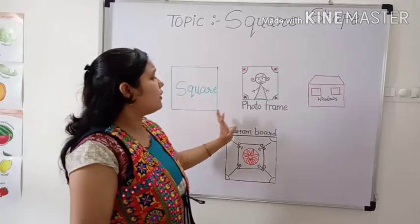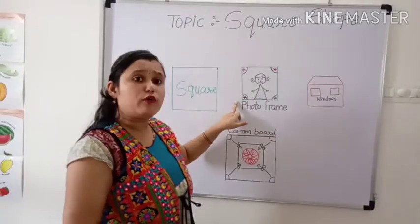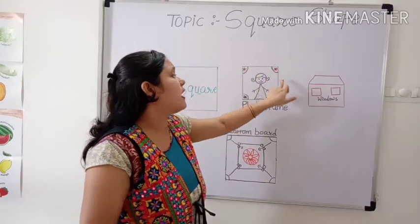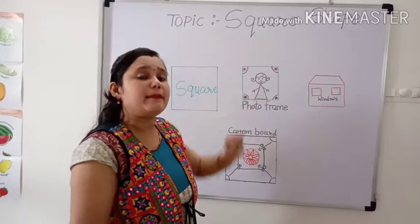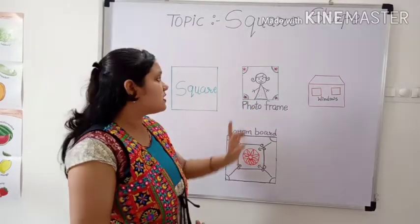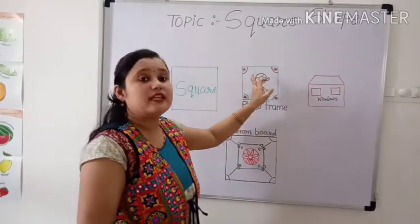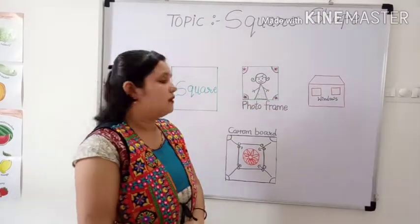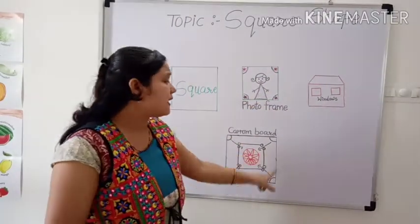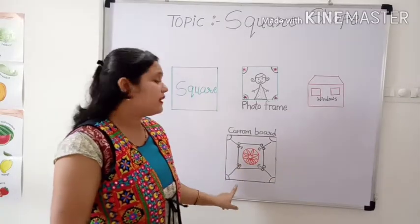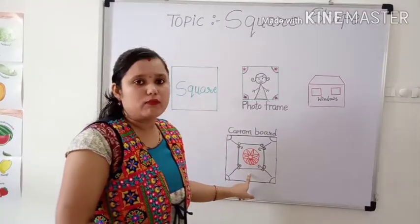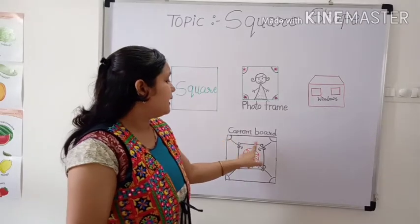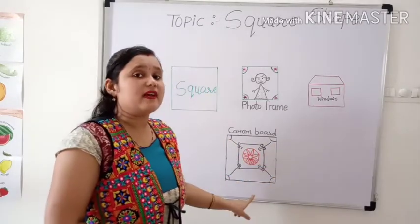Look here. This is a photo frame, and it is also in square shape. This photo frame is also in square shape. This is a carom ball. What is this? Carom ball. And it is also in square shape.